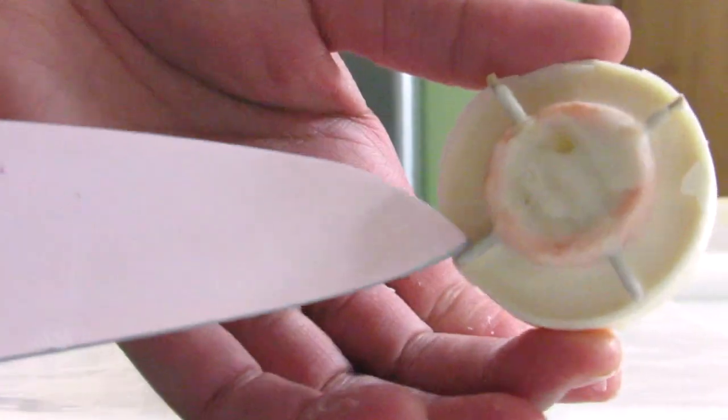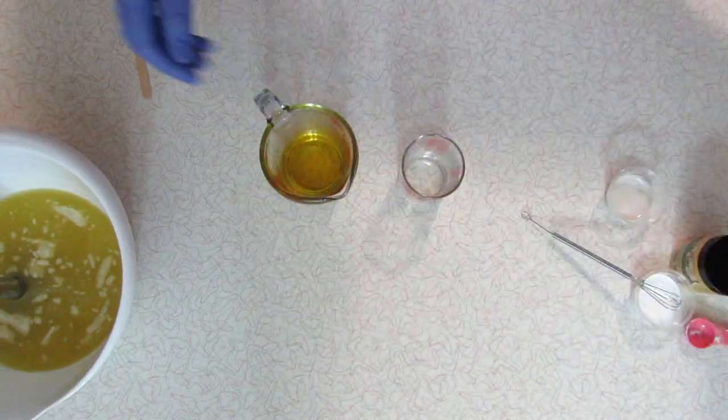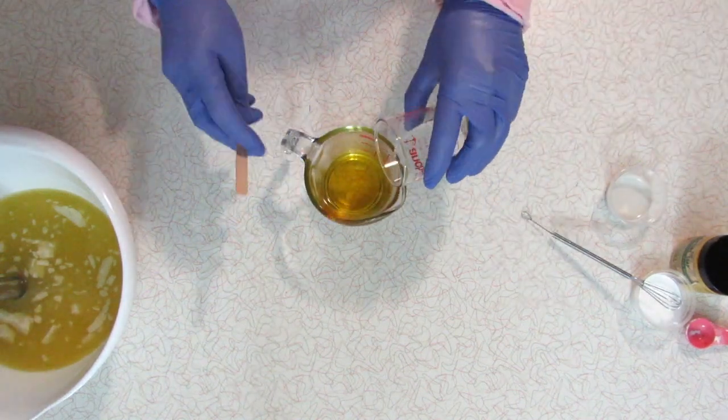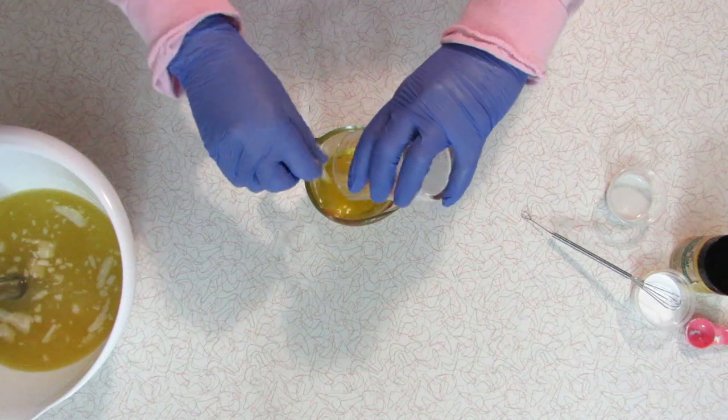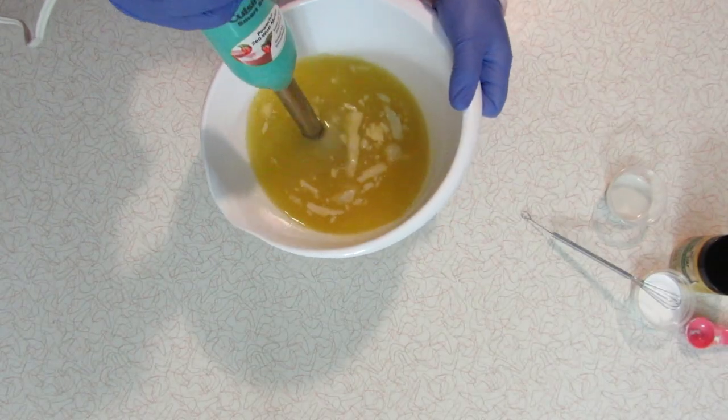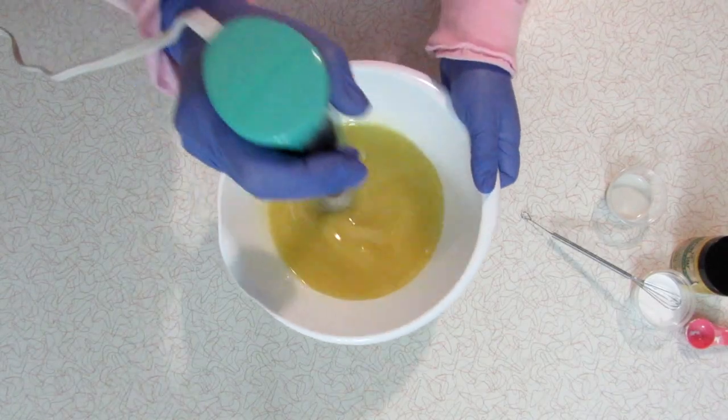Here I'm just showing you that I'm cutting off the toothpicks that held the embed in place in the two-inch mold. I'm adding color stabilizer to the fragrance oil because the fragrance oil will turn my soap brown if I don't use it. It still might turn brown, but there's less of a chance if I use the color stabilizer.